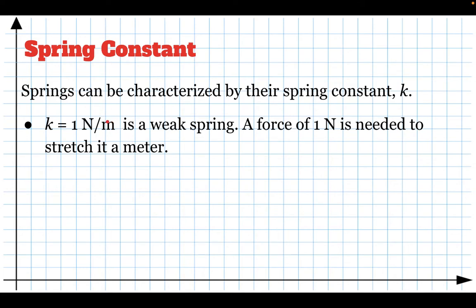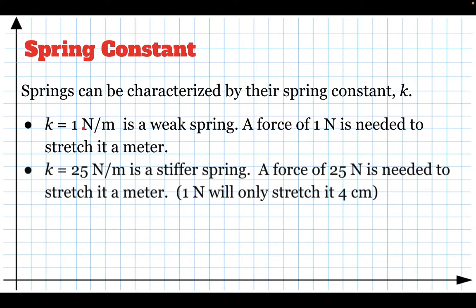Now that doesn't mean the spring can actually stretch a whole meter. Maybe 0.1 newtons stretches it 0.1 meters. So if you take the force and you divide it by the distance that that force stretches it, you get the spring constant. A spring constant of 25 newtons per meter is a little bit of a stiffer spring. This is like the spring I had hanging from the ceiling in my room. It takes a force of 25 newtons to stretch it a meter.